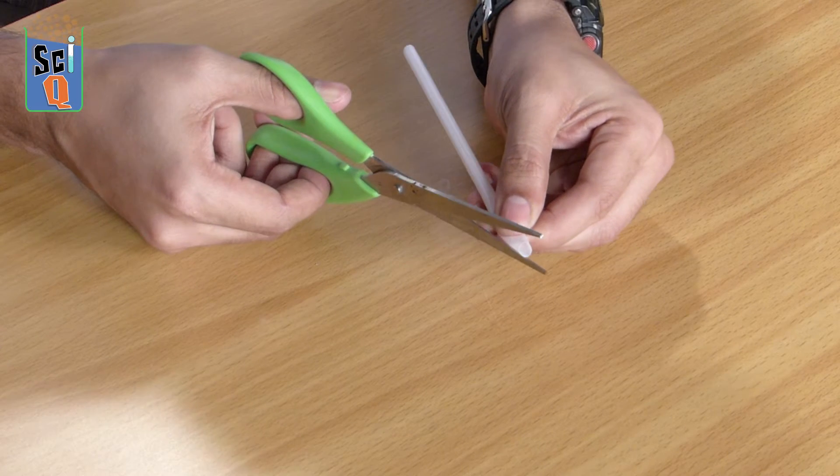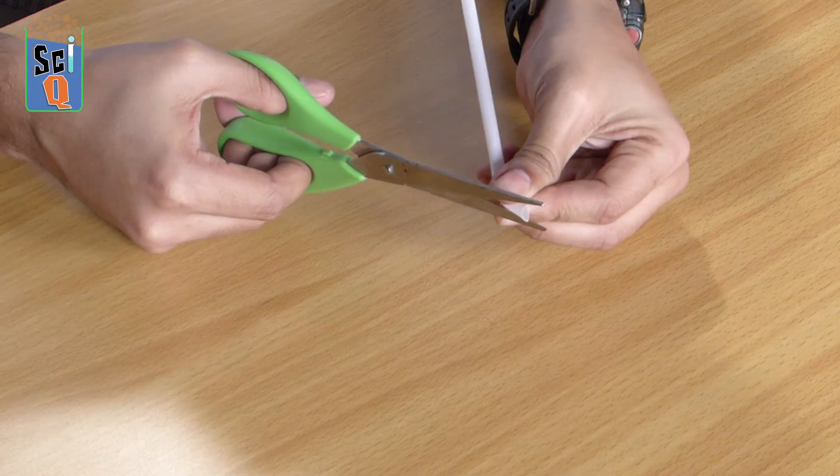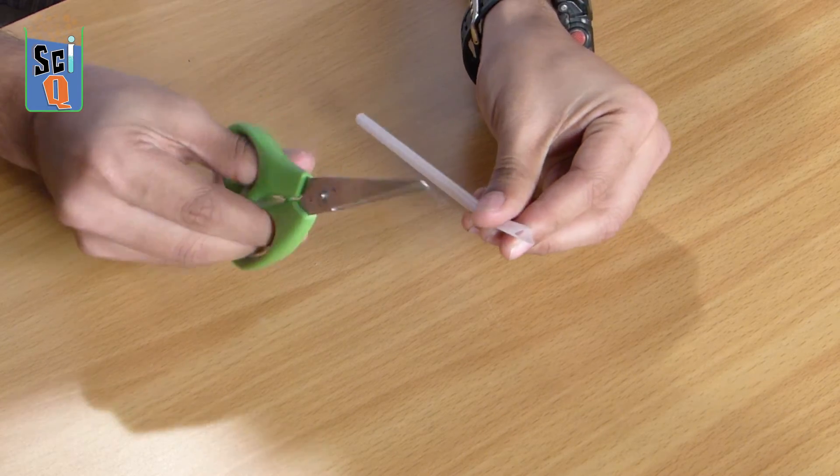Now to make the noise maker you're going to need to place two very well placed cuts on the straw. Now ideally you're supposed to be making a sort of arrow shape and if you place these two cuts here and if they're even you're set.